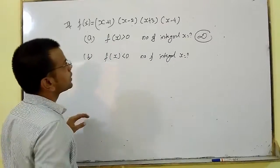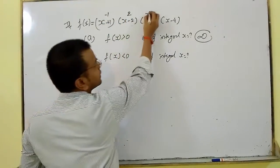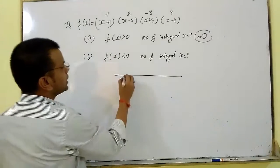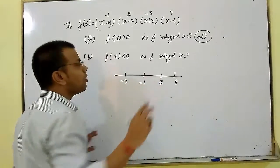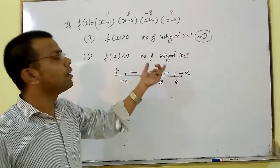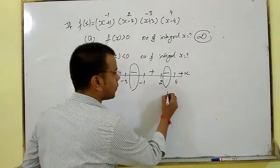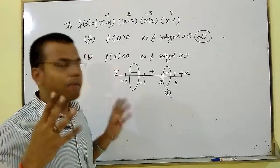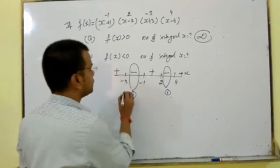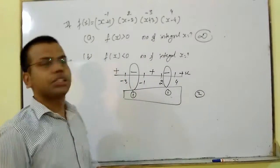To find the integral values, we first plot the roots. The roots are: x + 1 = 0 gives x = -1; x - 2 = 0 gives x = 2; x + 3 = 0 gives x = -3; x - 4 = 0 gives x = 4. Plotting in ascending order: -3, -1, 2, 4. The sign pattern is positive, negative, positive, negative, positive. We want negative zones: between -3 and -1, and between 2 and 4. Between 2 and 4 (exclusive), we have only one integral value: 3. Between -3 and -1 (exclusive), we have only one integral value: -2. So the total integral values for fx negative is 2.